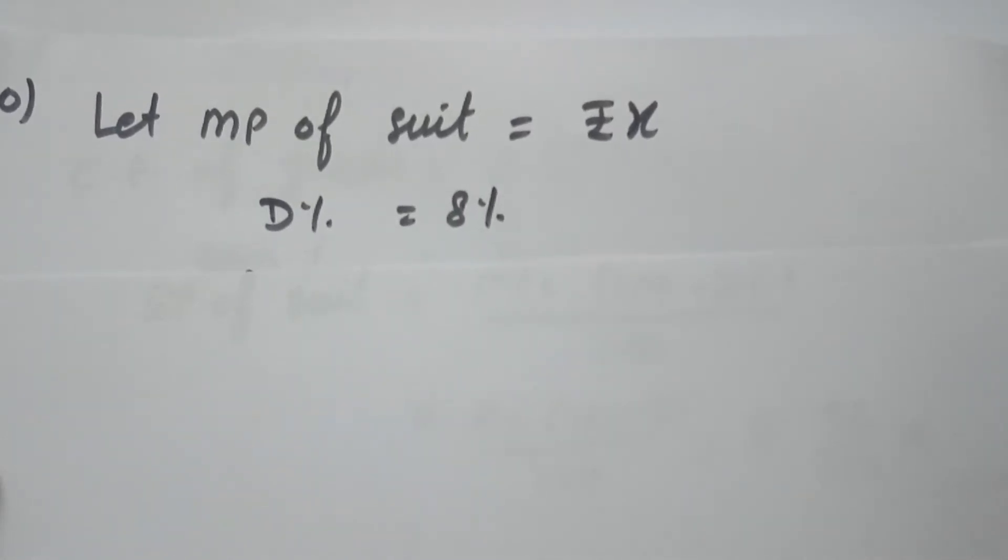This question is that Preeti allows 8% discount on the mark price of the suits and still makes a profit of 15%. If her gain over the sale of suits is Rs 156, find the mark price of the suit.